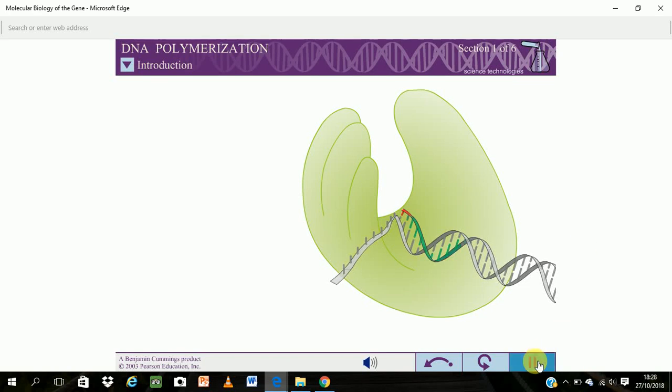For genetic information to be passed on from a parent cell to a daughter cell, the parental DNA must be copied into two identical daughter DNA molecules.